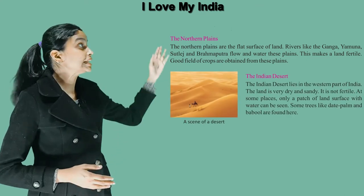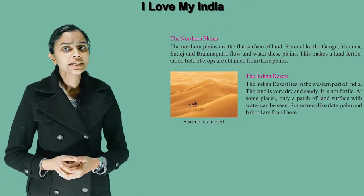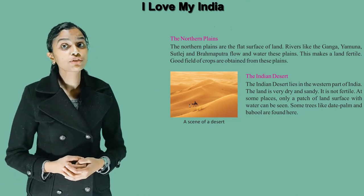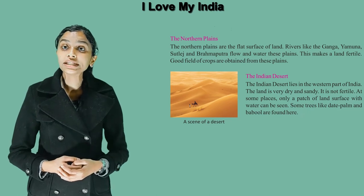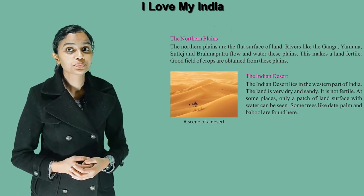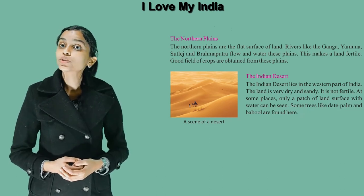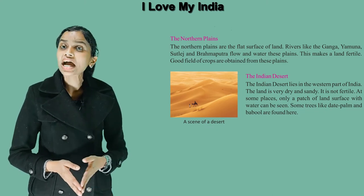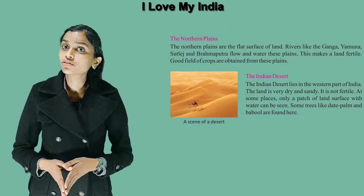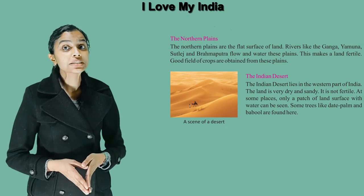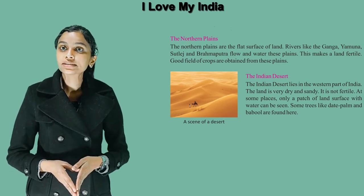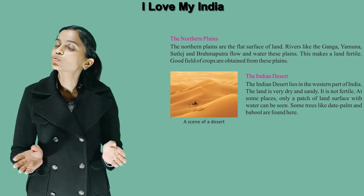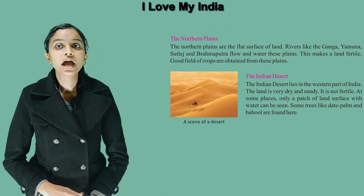The third one is the Indian Desert. The Indian Desert lies in the western part of India. The land is very dry and sandy. It is not fertile. At some places, only a patch of land surface with water can be seen. Some trees like date palm and bamboo are found here.